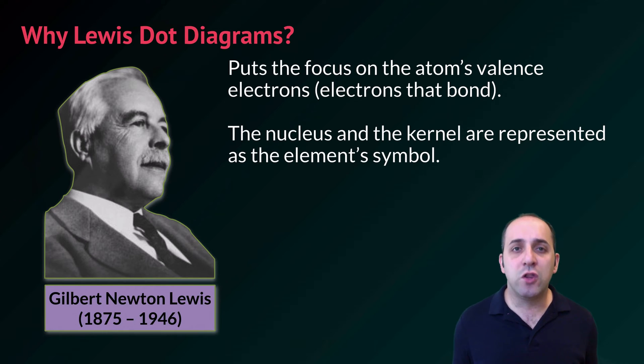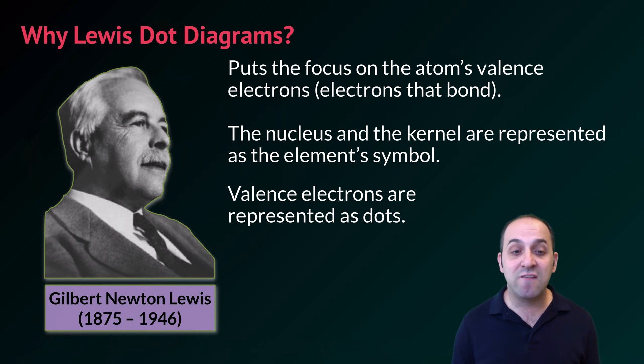In a Lewis dot diagram, the element symbol represents both the nucleus and all the kernel electrons, and the valence electrons are represented as dots. It's a very common way of representing atoms, particularly when looking at atoms interacting through chemical bonds.